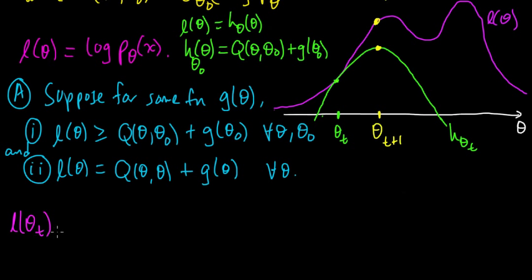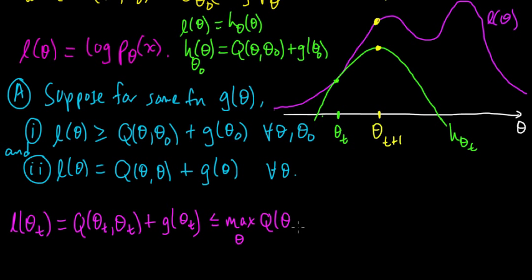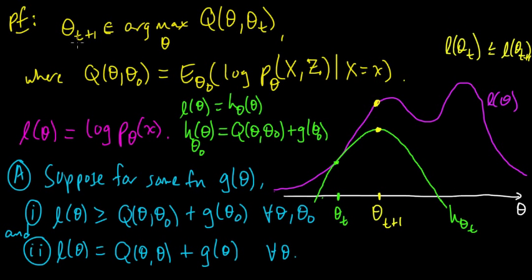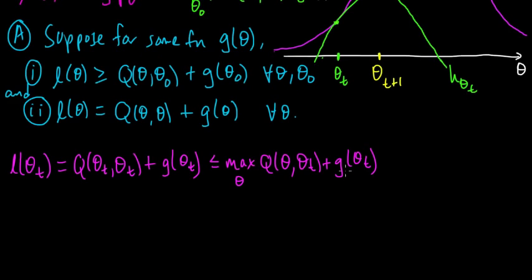So L of theta t by property 2, this is q theta t with q theta t plus g theta t. And if we maximize this over the first argument, then this doesn't decrease. This is certainly greater or equal to that. So the max is greater or equal, and g still sticks around here. And now this max is, by definition, equal to q of theta t plus 1 with theta t because q theta t plus 1 maximizes this as a function of theta. That's exactly the expression above, except it's the arg max.